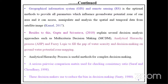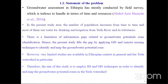A study in 2010 explained several decision analysis approaches such as multi-criteria decision-making or analytical hierarchy process to fill the gap of water scarcity and decision-making on groundwater potential zone mapping. The analytical hierarchy process is useful for complex decision-making. It uses a pairwise comparison matrix for checking the consistency ratio, and decision makers use this approach.